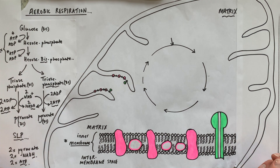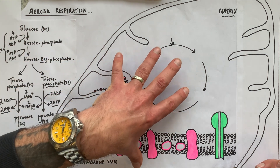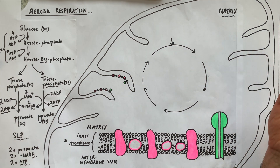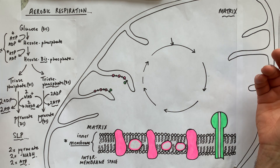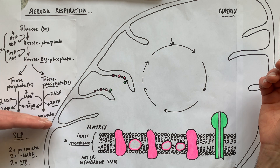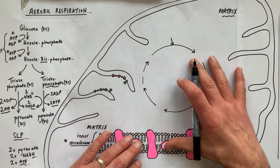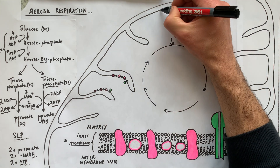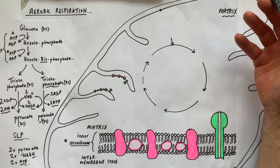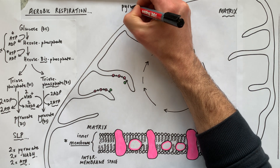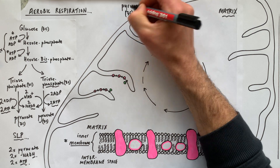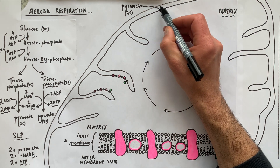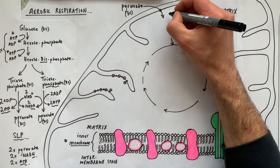Once glycolysis is complete, we have two pyruvates. If there is no oxygen, the pyruvate in a muscle cell gets reduced to lactate, which reoxidises NAD to allow glycolysis to continue. However, if oxygen is present, pyruvate enters the mitochondrion into the matrix via facilitated diffusion or active transport through carrier proteins in the outer and inner mitochondrial membranes.